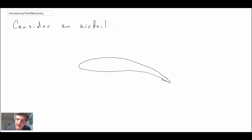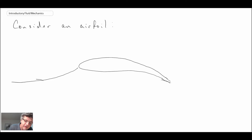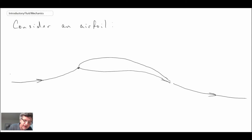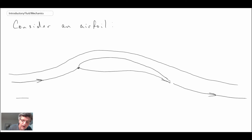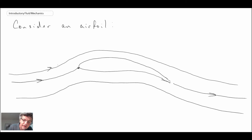Let me close up the trailing edge so it looks a bit better. Typically with an airfoil, you have a streamline coming in, there's a stagnation point at the front — we'll talk more about that later — and then the flow off the trailing edge goes like that. You have streamlines coming over the top and over the bottom. That's the flow around an airfoil.